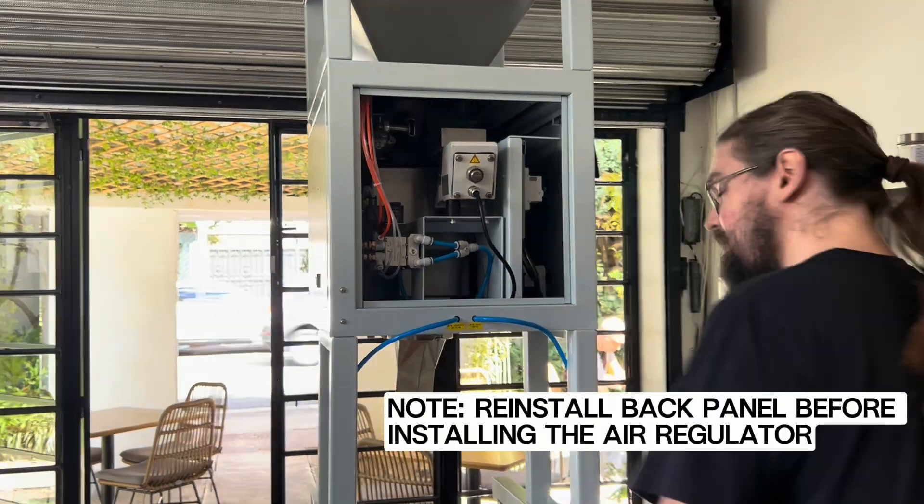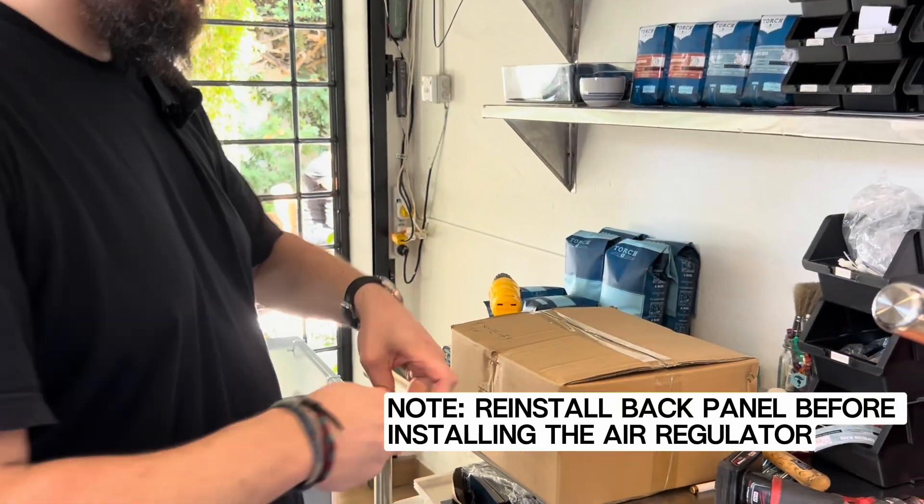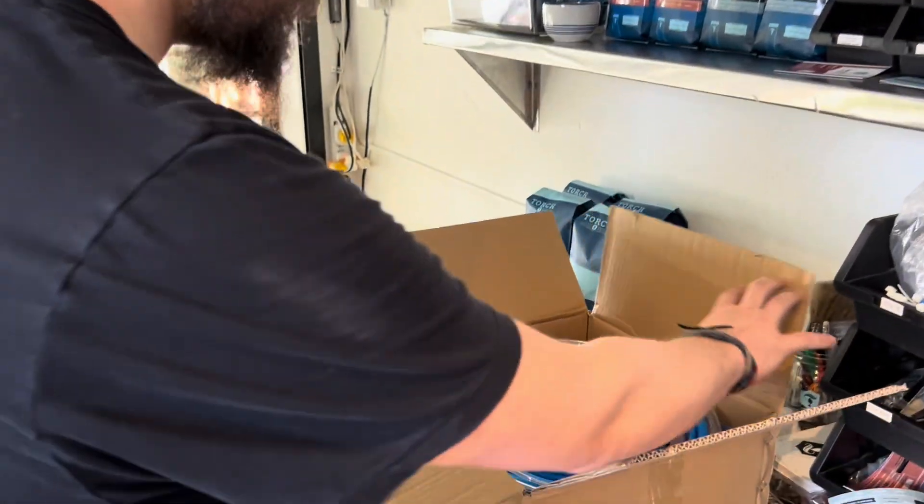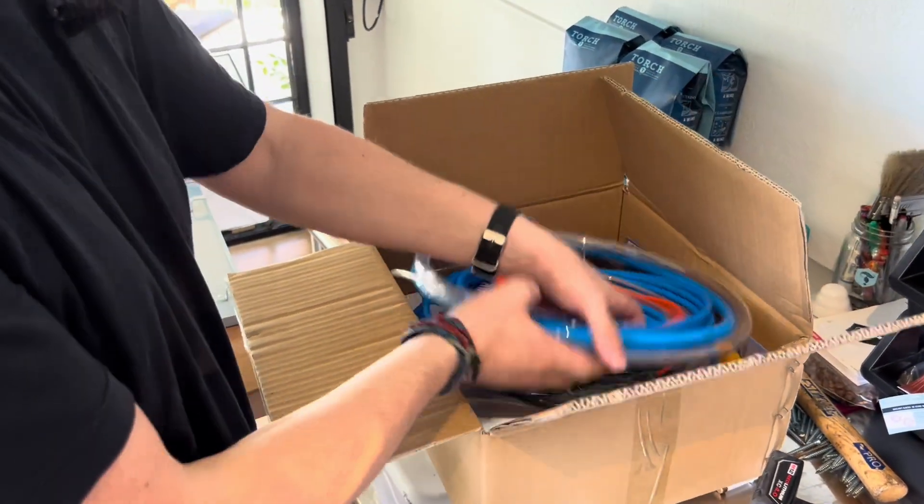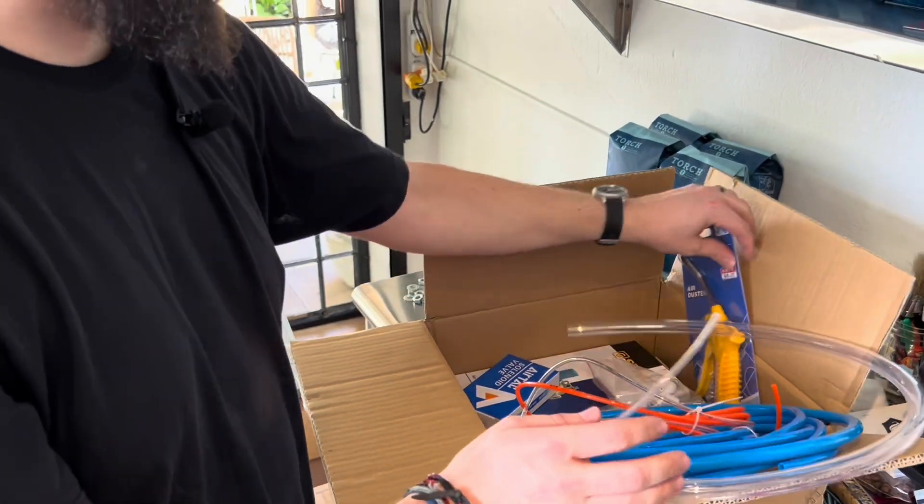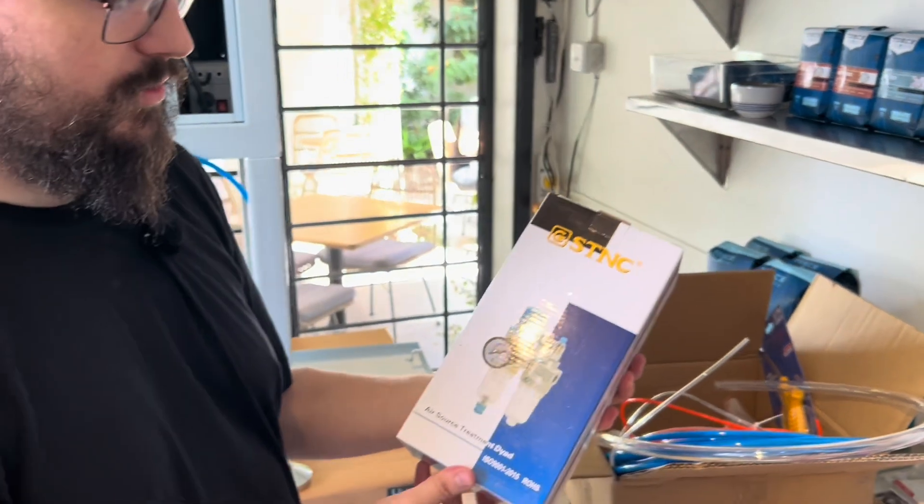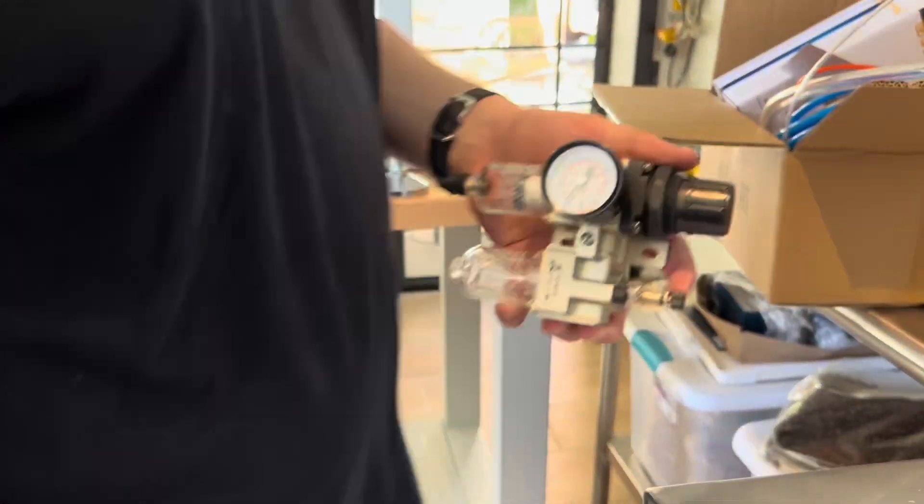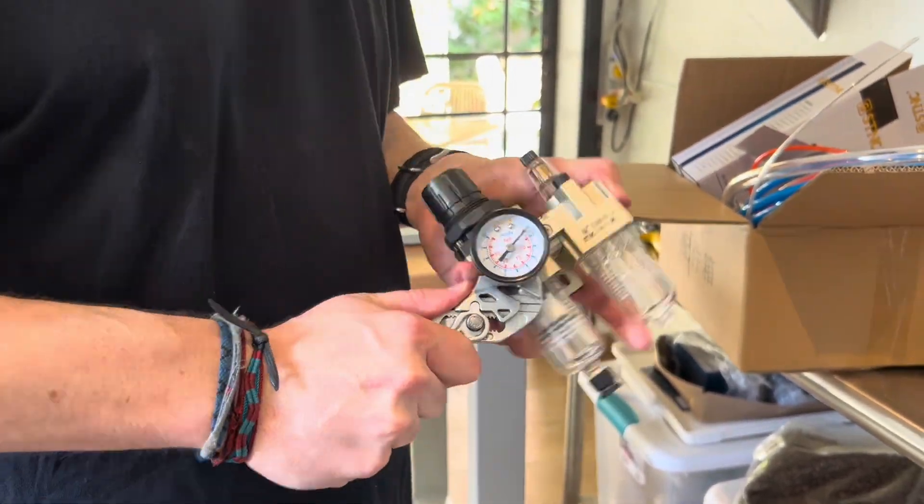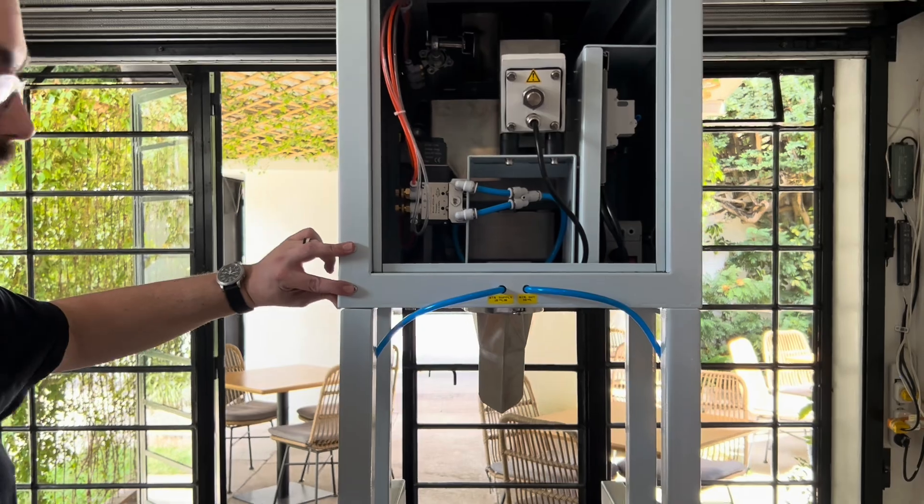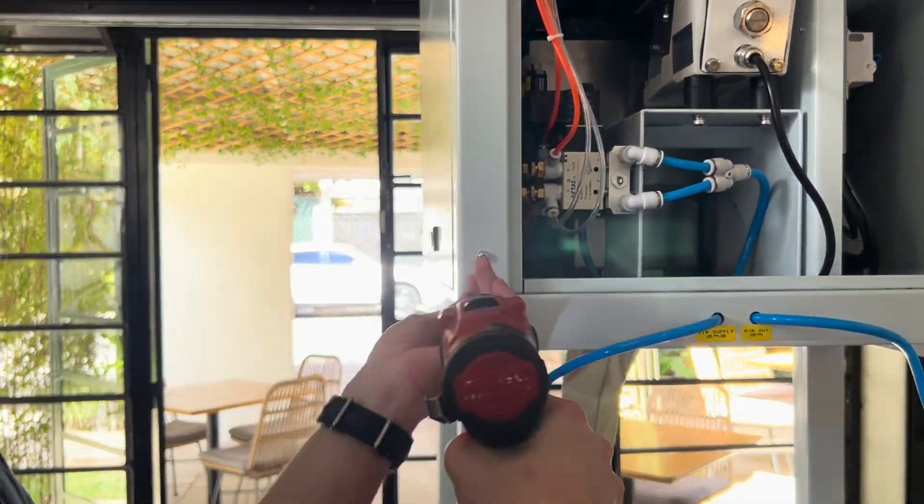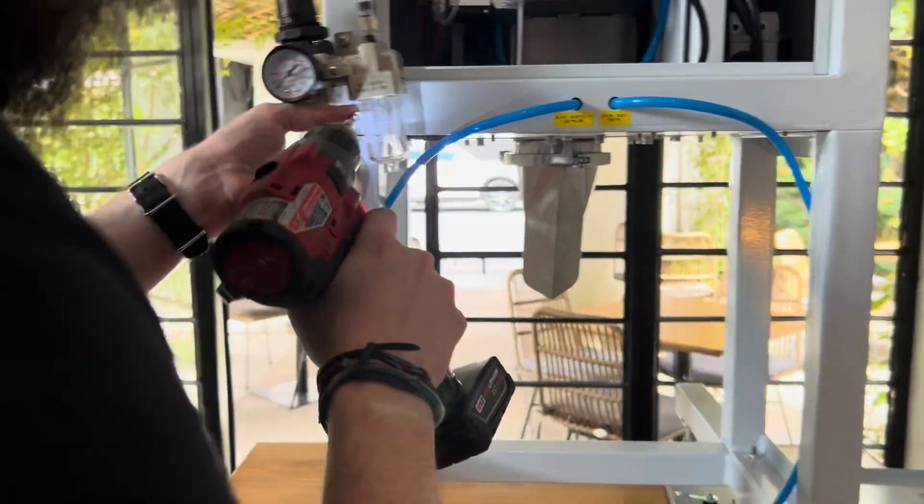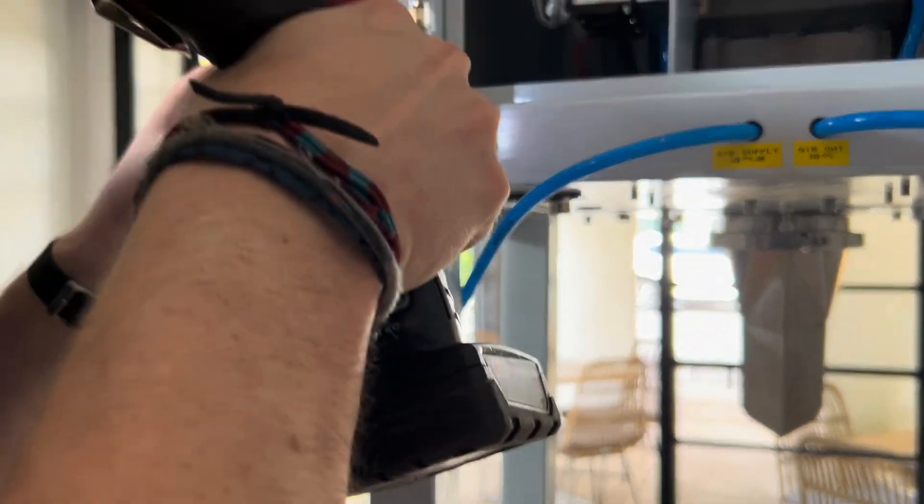We'll get our accessories box opened up. Inside the accessories box, we've got some air lines, some extra solenoids, an air gun, etc. But what we want is our air regulator. These two screws are what will be used to install it. We'll back those out, just leave that top one loose so we can get the bottom one in nice and easy. And now we will tighten them.